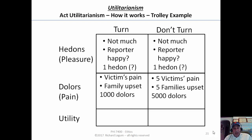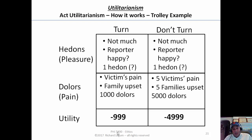To get the utility of turning and not turning, we just do the math. For turning: one Hedon minus $1,000 gives a utility of minus $999. For not turning: five victims and five families gives a utility of minus $4,999. The utility of turning — minus $999 — is much higher than minus almost $5,000, because that's really bad.